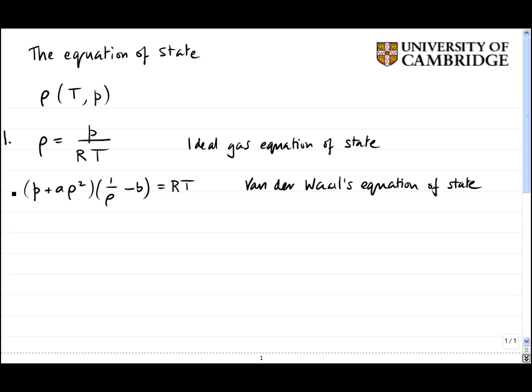Let's label these one for the ideal gas equation of state, two for the van der Waals equation of state. Now I'm going to introduce a third equation of state, which is simply to say that rho equals a constant. We often use this because in many situations density changes are very small, and to say that rho is a constant is a very good approximation.